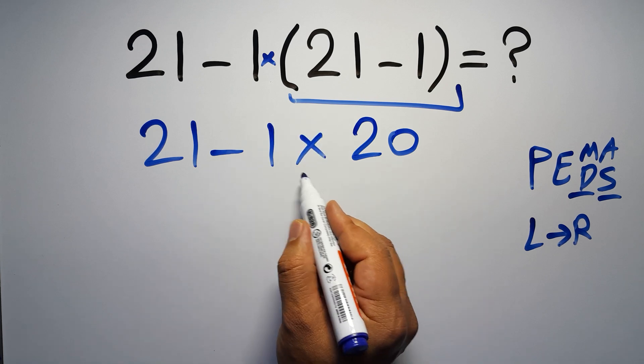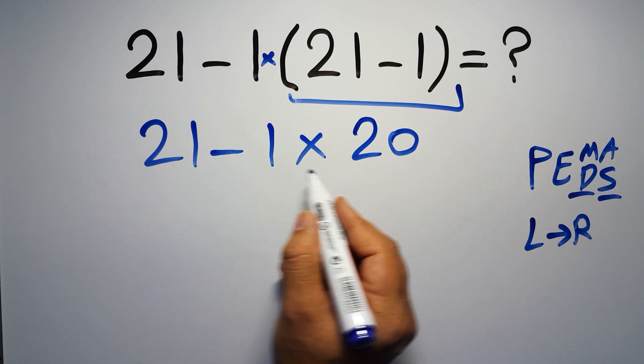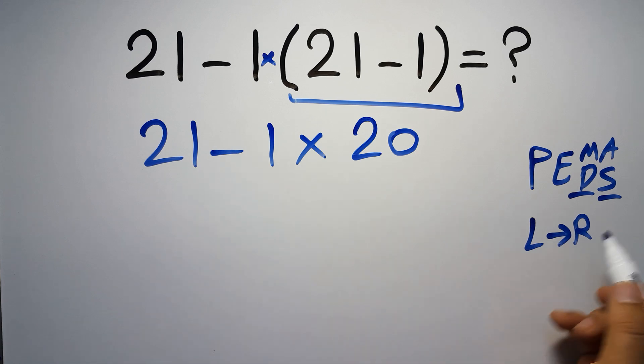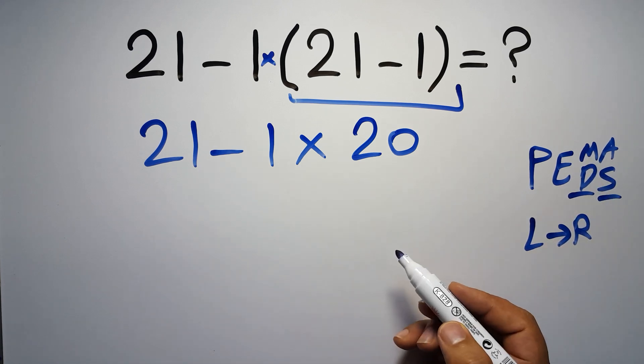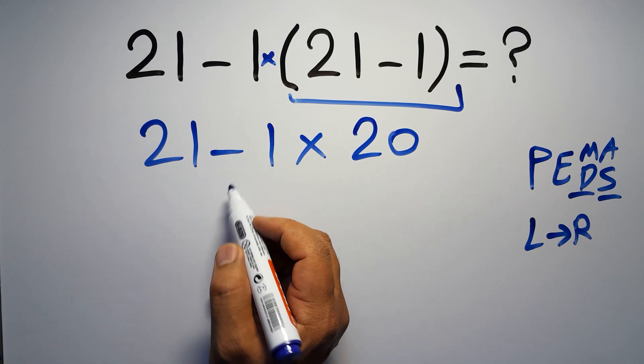Now we have one subtraction and one multiplication. According to the PEMDAS, multiplication has higher priority than subtraction, because multiplication comes before subtraction, so here first we have to do this multiplication, then this subtraction.